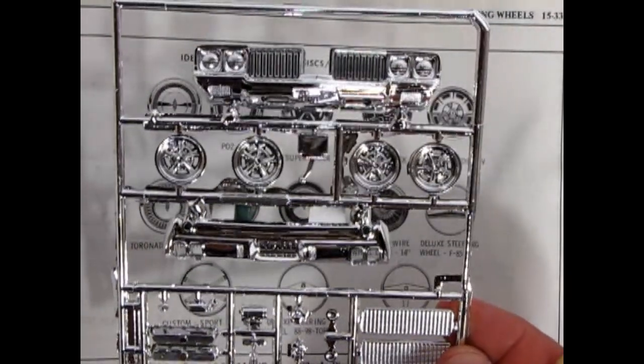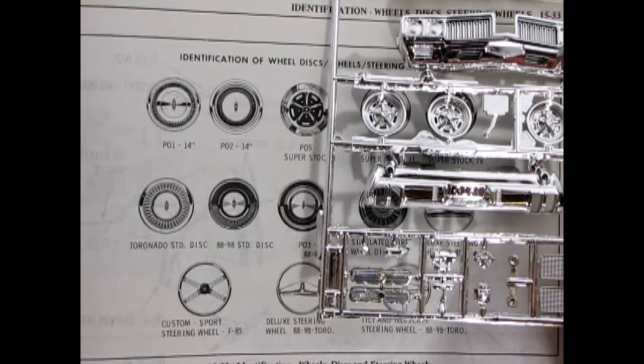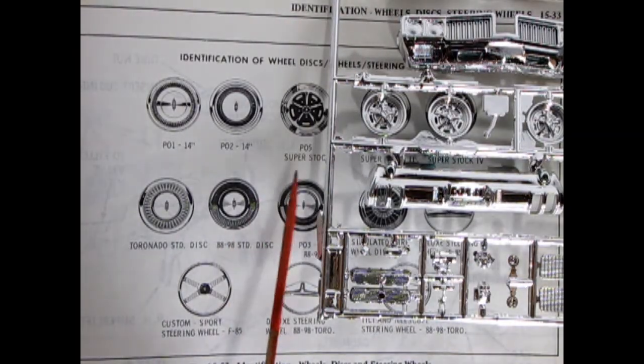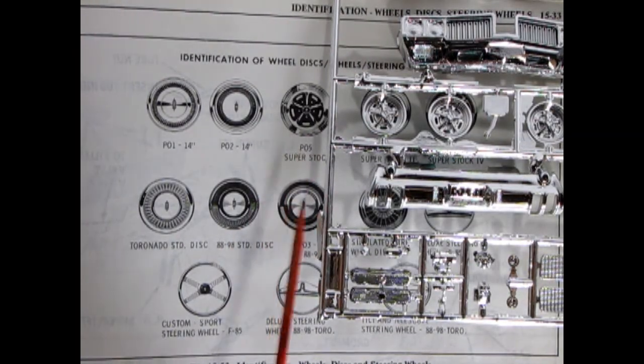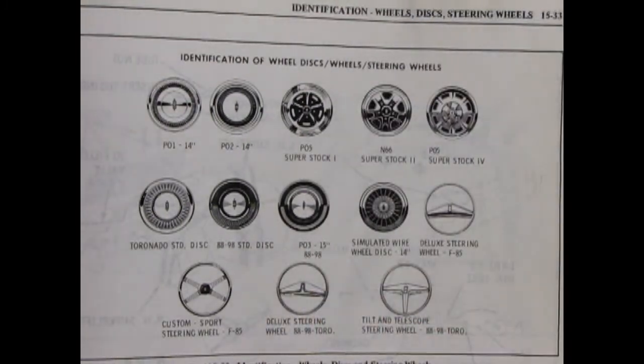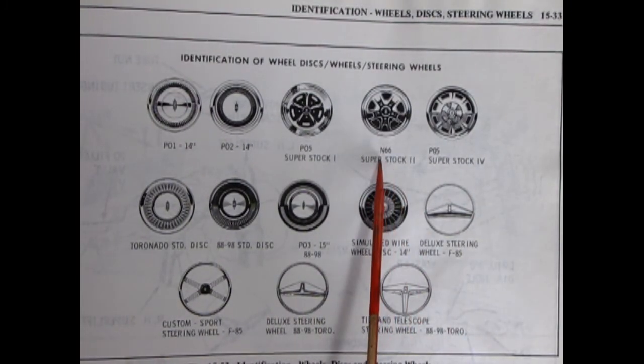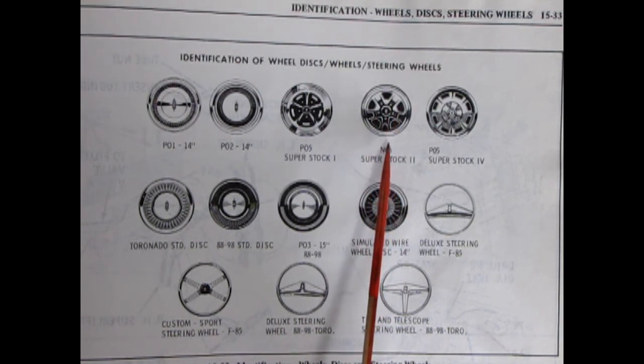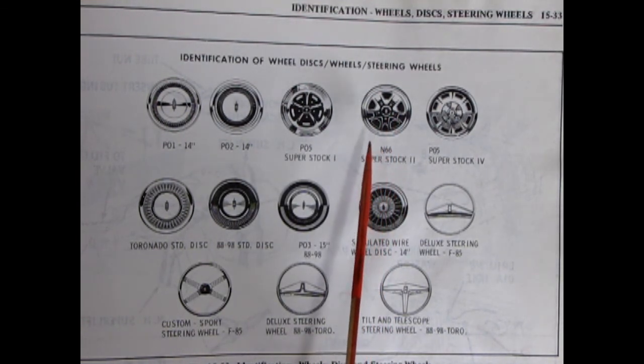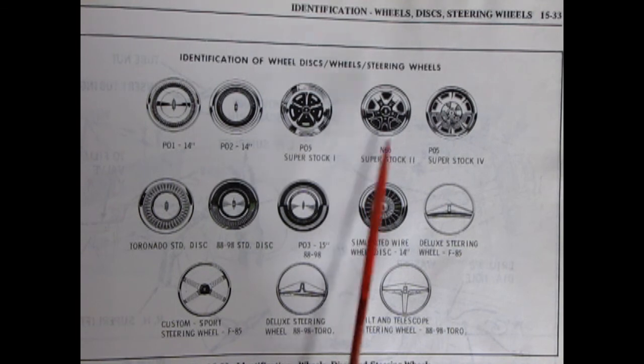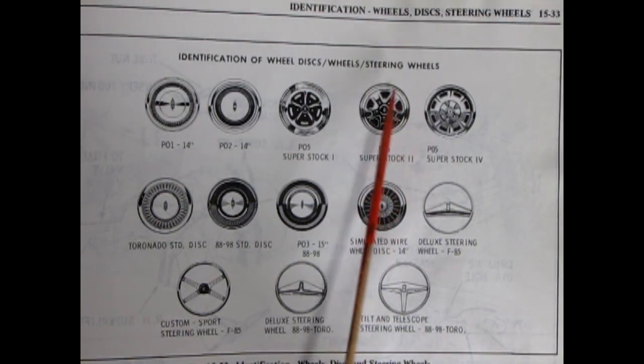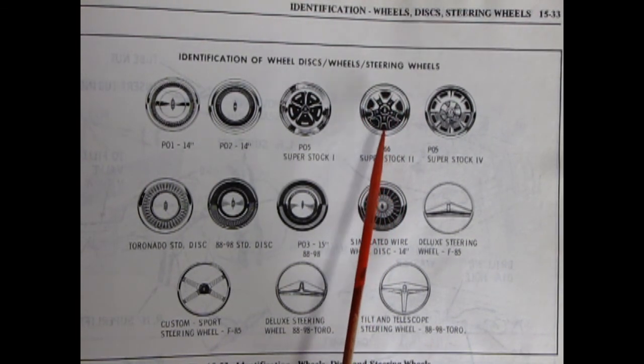Spoiler alert! There's our wheels on the chrome part tree which match our P05 Superstock number 1 wheels from the book. But unfortunately on the box art it shows the Superstock number 2s, N66, which sadly are not included in the kit but would also look really nice.